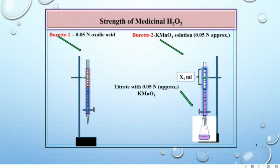To this same solution, add 1 ml oxalic acid from burette number 1 and repeat the titration for X2 ml. Similarly, repeat the titration for X3 ml.